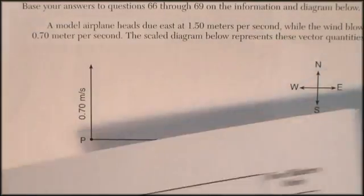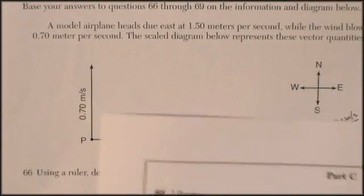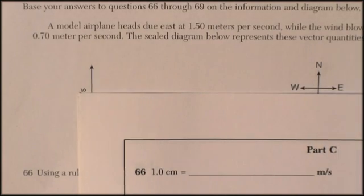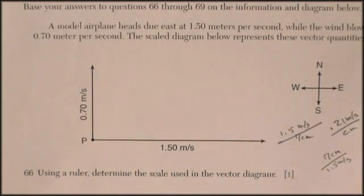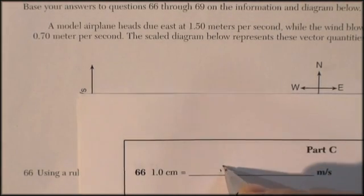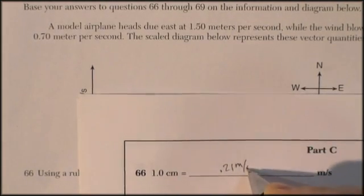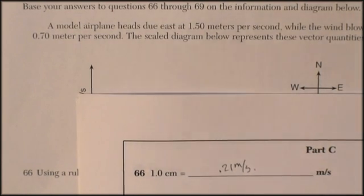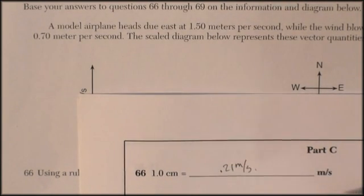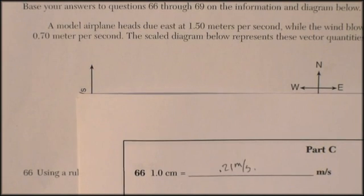So I get my answer sheet. Oh, look at here. There it is. 1 centimeter is equal to 0.21 meters per second. See, I had them both answered. Centimeters in meters per second, in meters per second, in centimeters. So whichever one they asked for, we had that answer.